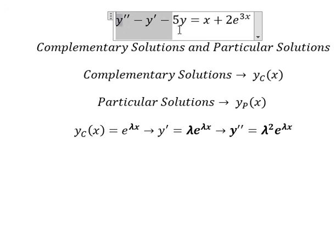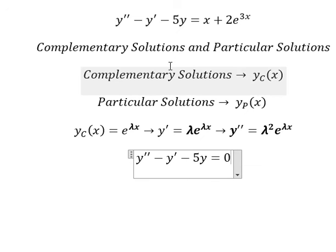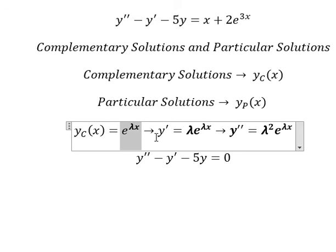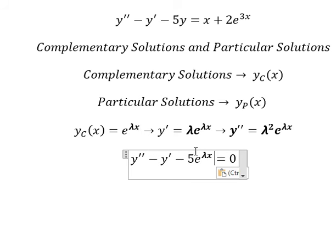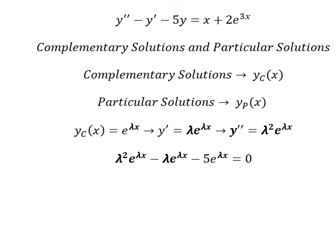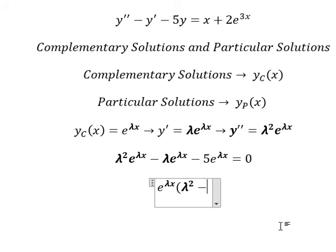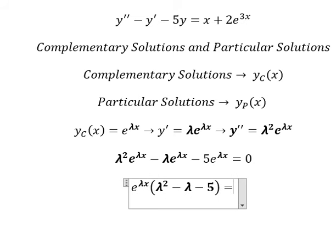So we go back to this equation. This equals zero because this is the complementary solution — that's why we set the right-hand side to zero. Now we substitute each term in, and after factoring out e to the power of lambda x, we get the characteristic equation: lambda squared minus lambda minus 5 equals zero.